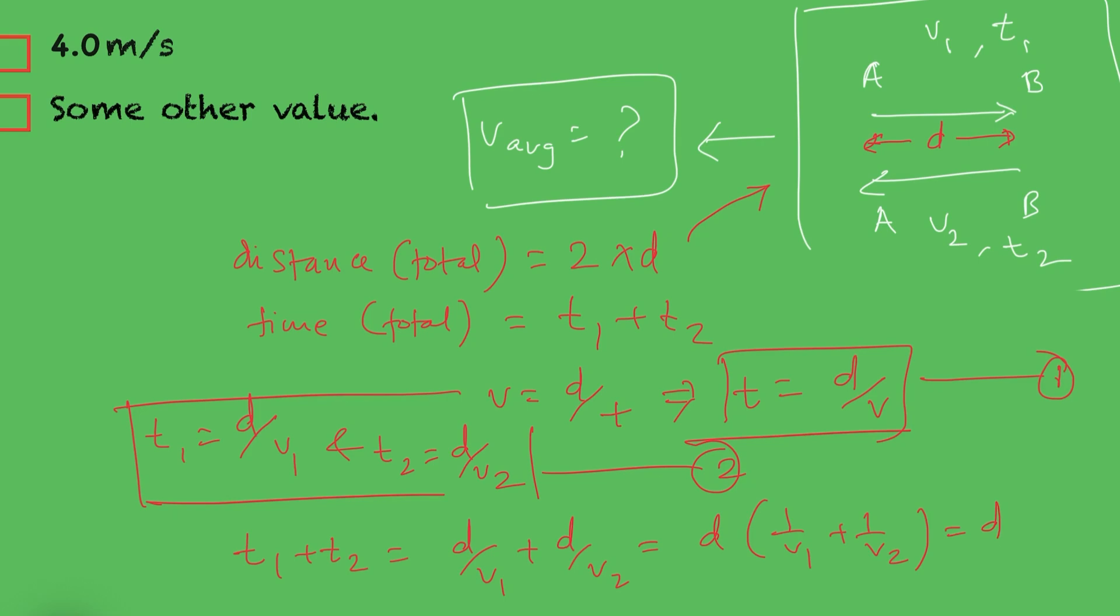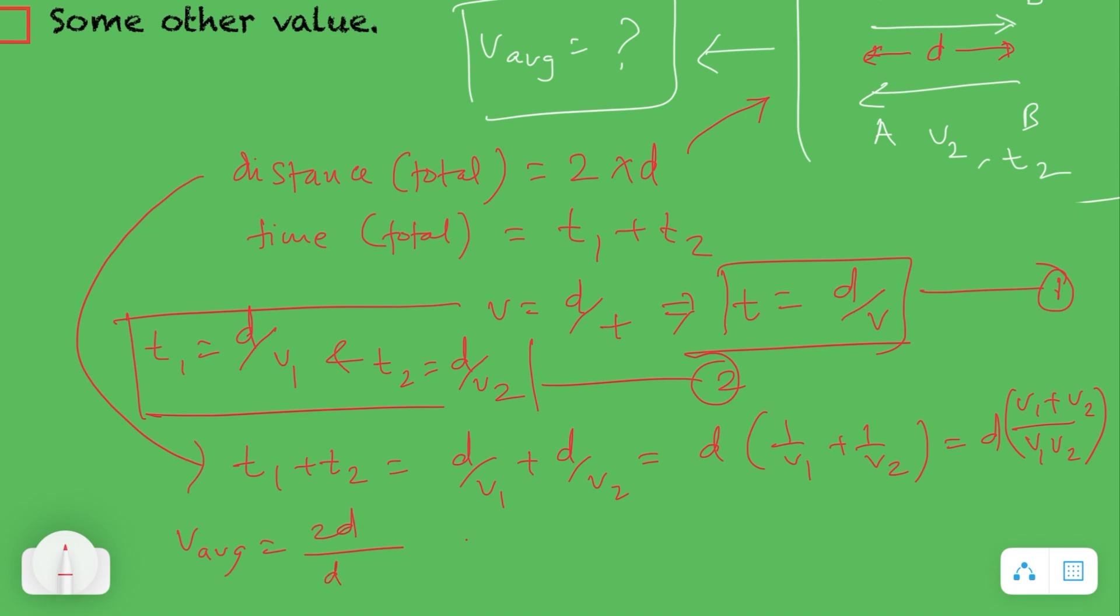Both V1 and V2 are given, where D can be assumed any number or leave it as is. Now, V average equals to total distance divided by the total time. V average equals 2 times V1 times V2 divided by V1 plus V2.